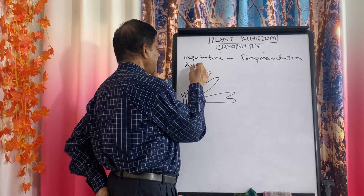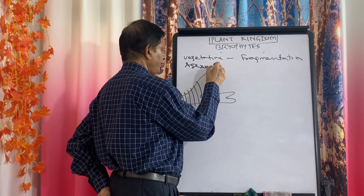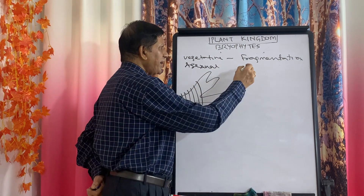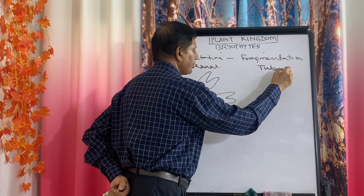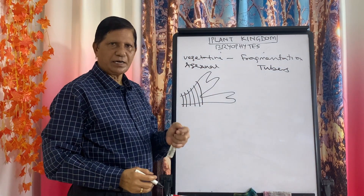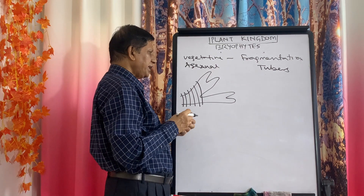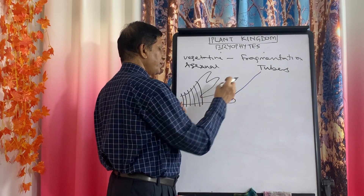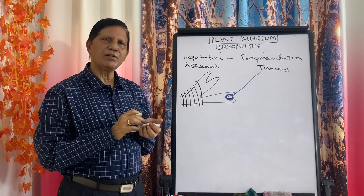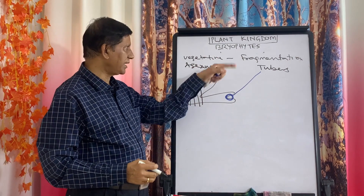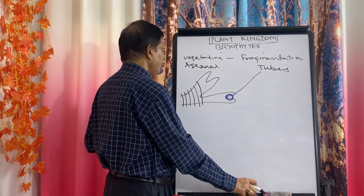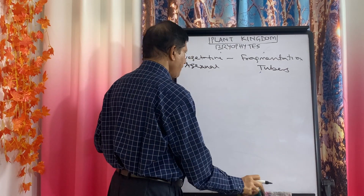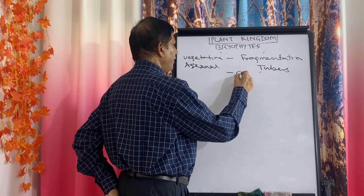Another form of vegetative reproduction involves tubers. When conditions are unfavorable, the tip of the thallus — where the growing part lies — is surrounded by thick walls and is known as tubers. Asexual reproduction usually takes place by means of the formation of gemmae.